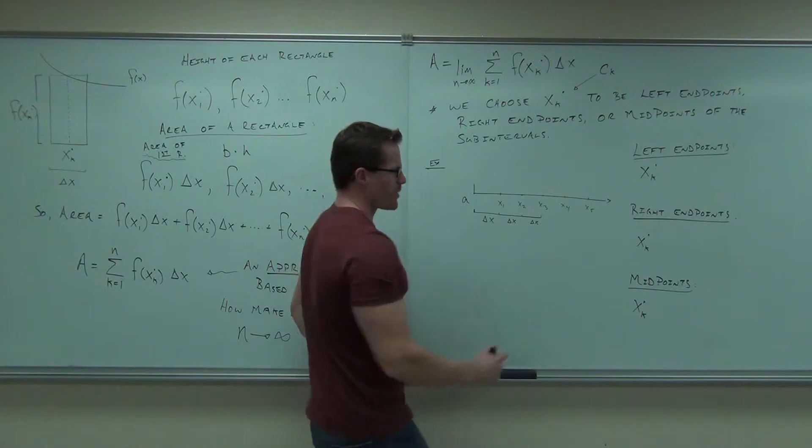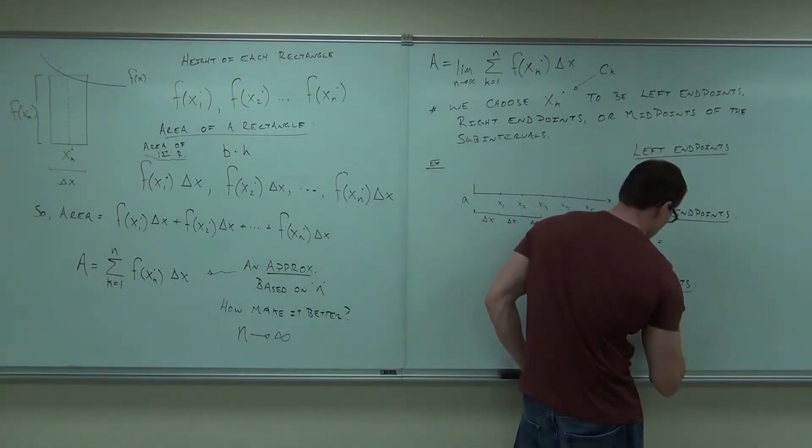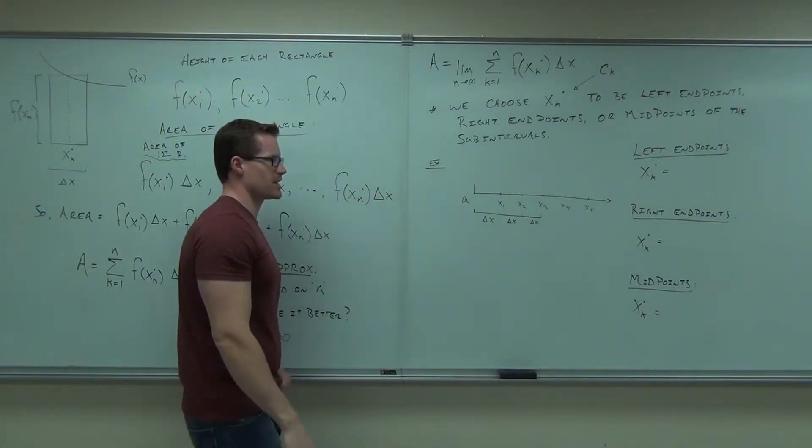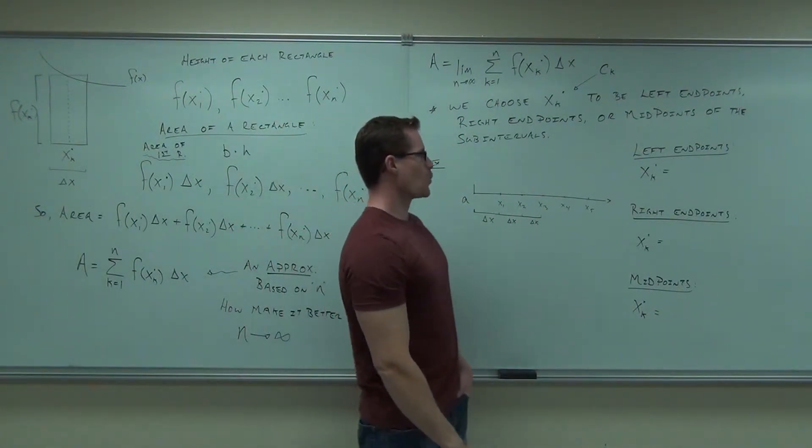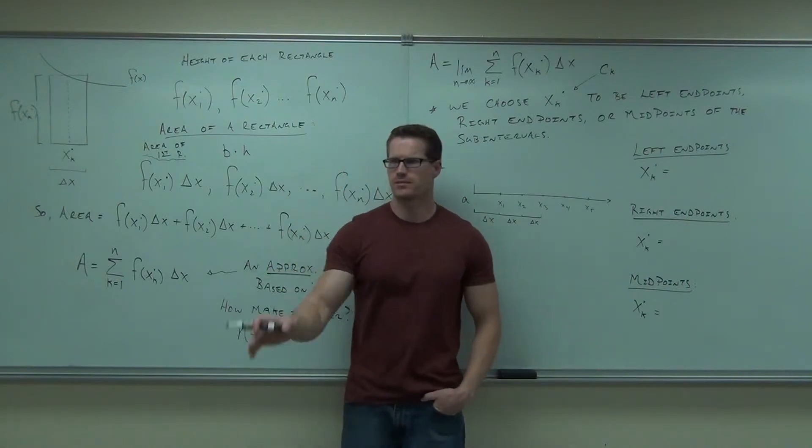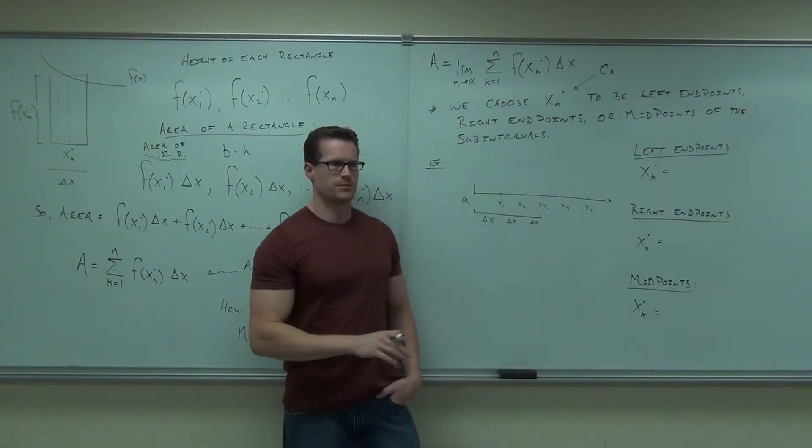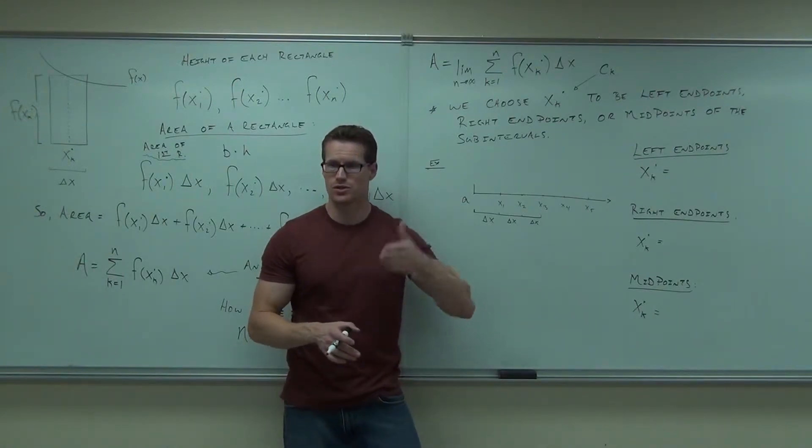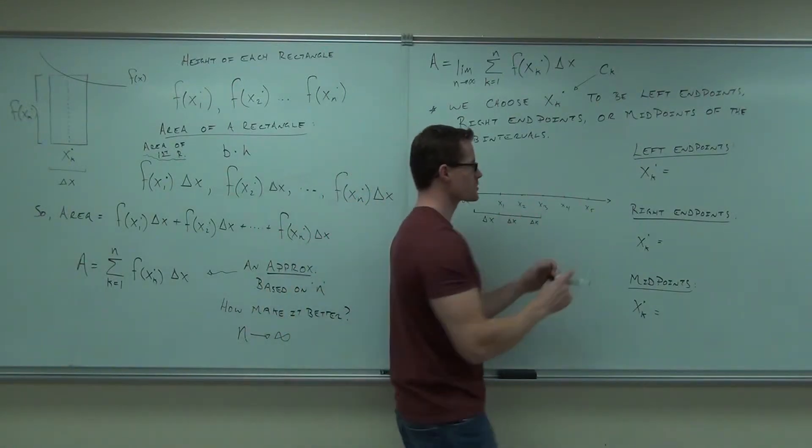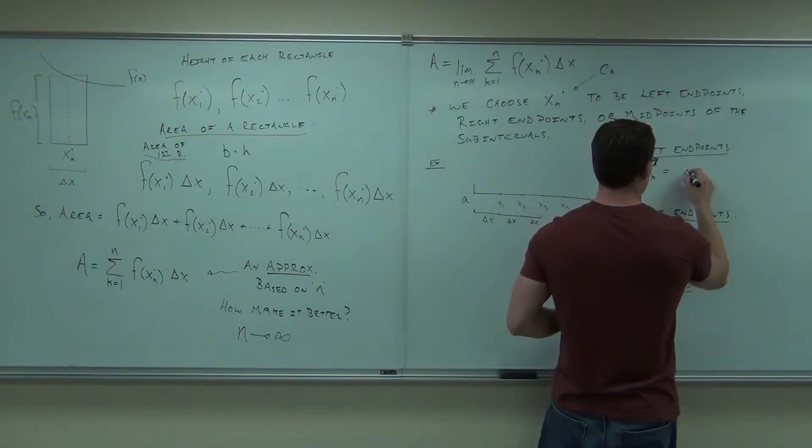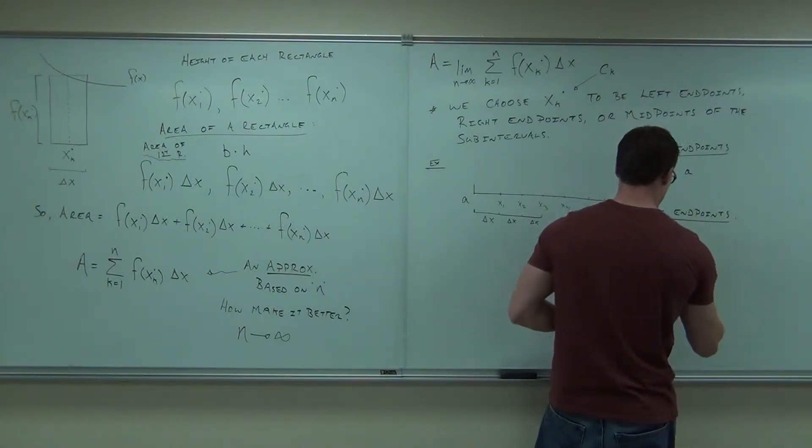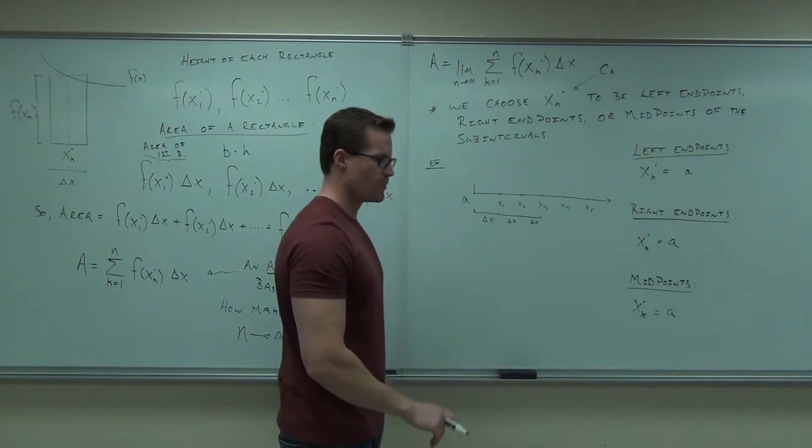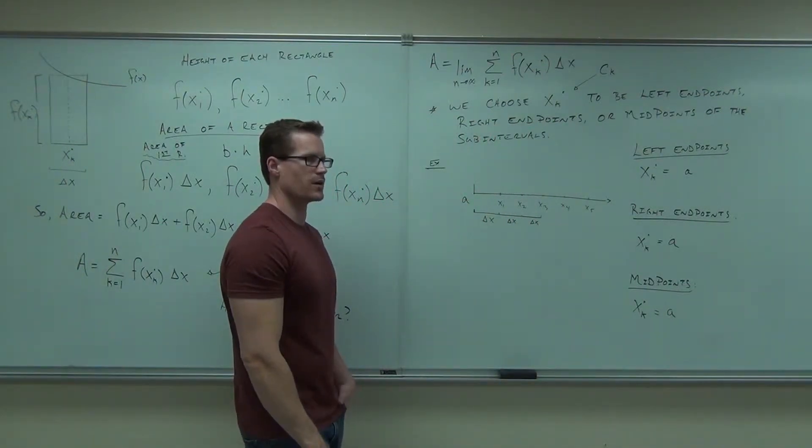So let's talk about all these. What are we going to let these things equal if we're talking about left, right, and midpoints, respectively? Let's talk about the left endpoints. Where does this whole thing start? Not at zero or anything like that. At what? It starts at a. Wherever a is, that's where our interval is going to start. Agree? So each of these is going to have an a.